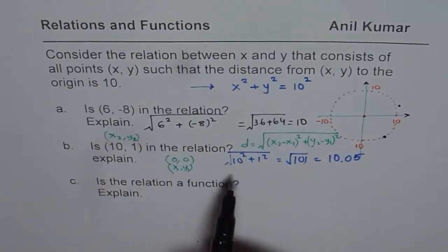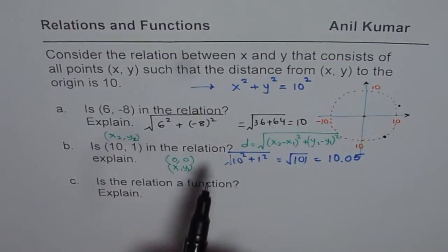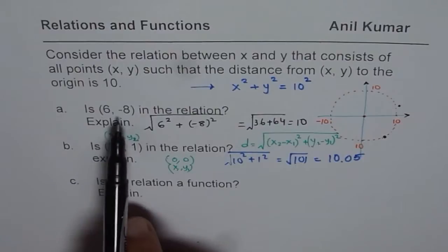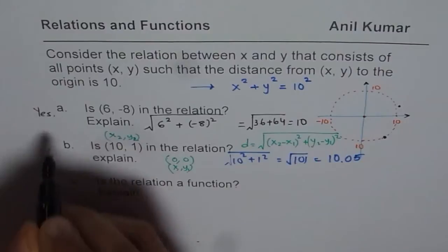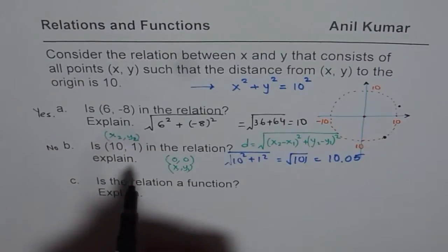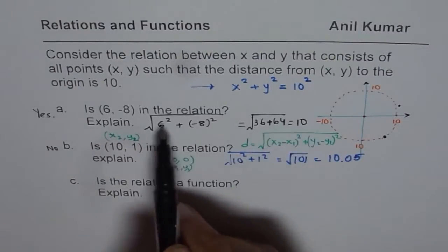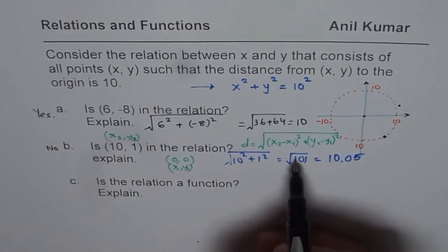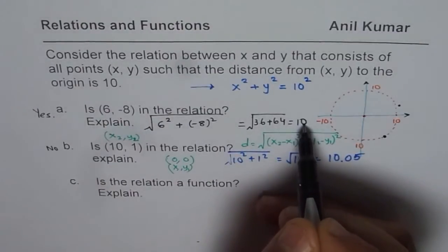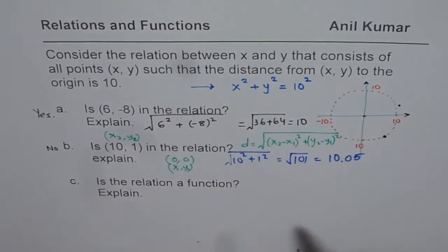From these two examples, you understand how to find whether a point is in the relation or not. The first one is yes, and the second one is no. The reason is that the distance of the point from the origin is not 10. It is not 10 units for the second case. And for the first case, it is 10 units. And therefore, it is on the relation.